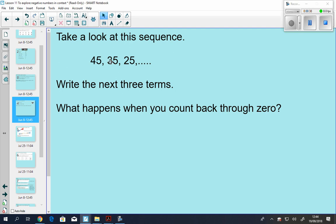45 to 35—if we think about what the difference might be, it could be subtracting 10. We can apply that to the next one and see if that's correct. 35 to 25, subtract 10 again, that's right. So the rule is to subtract 10, which will help us write the next three terms.